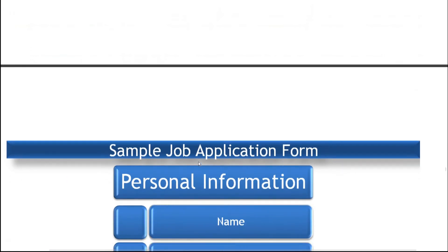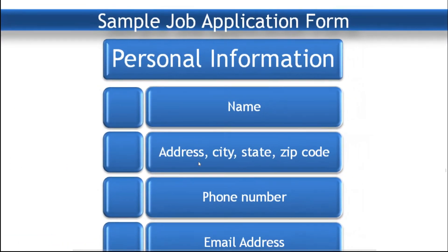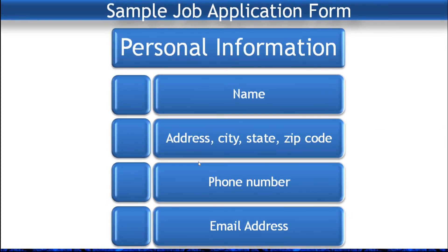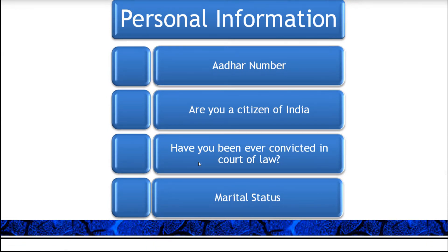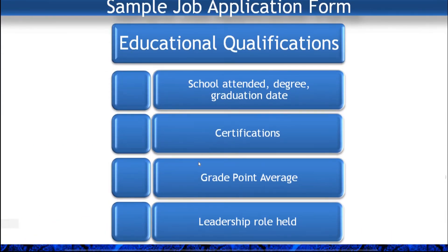A sample job application form has several sections. The first section is personal information, which includes name, address, city, state, phone number, email address, Aadhaar number, whether you are a citizen of India, whether you have ever been convicted in a court of law, and marital status. Then educational qualification includes school attended, degree, graduation date, certifications, grade point average, and leadership roles held.